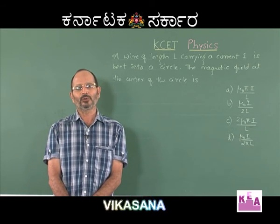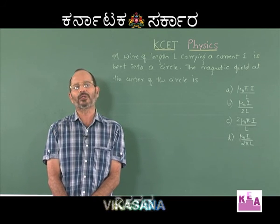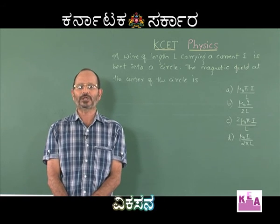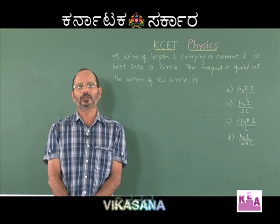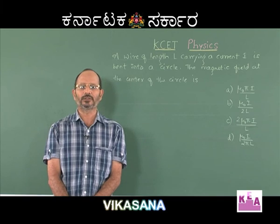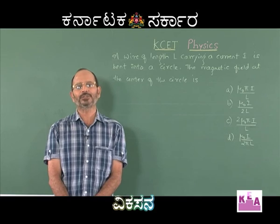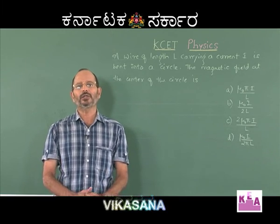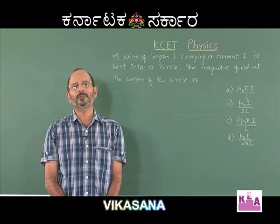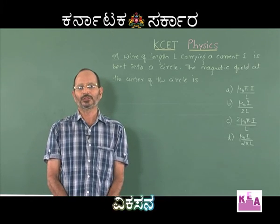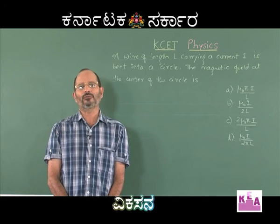The formula for the force experienced by a charged particle in a magnetic field is F = qv×B, where v is the velocity of the charged particle, q is the charge, and B is the magnetic field. The magnitude of v×B is the magnitude of v times the magnitude of B times sin of the angle theta between v and B.